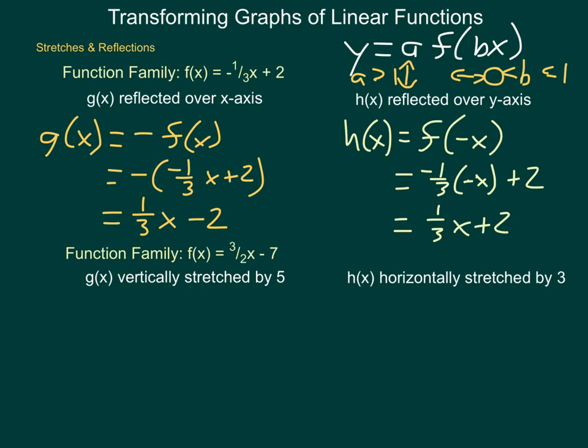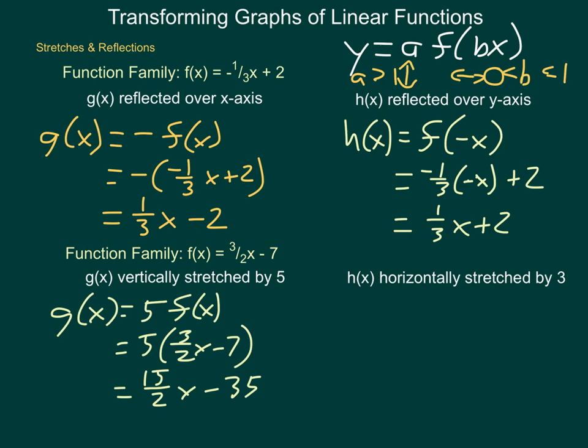g of x vertically stretched is my f of x vertically stretched by 5. So, my function family f of x is 3 halves x minus 7. g of x is going to be 5 times f of x. And, that is simply 5 times 3 halves x minus 7, which is going to be 15 halves x minus 35. This will take the entire graph of f and make it 5 times taller on that y axis.